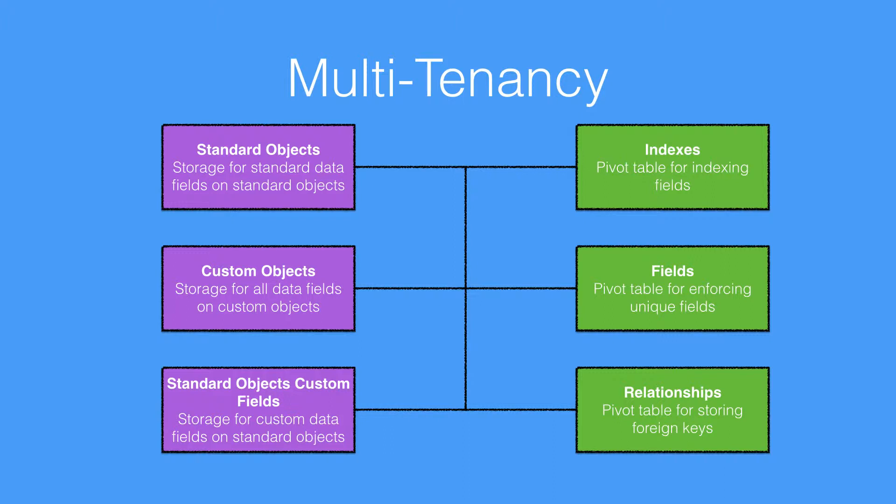On the left-hand side here we can see that there is a series of tables for standard objects that store all the standard data fields for them — so that would be something like the first name and last name on contact. We have custom objects and a table that stores all of the data fields on custom objects, and we then have another data table that stores all of the custom fields for our standard objects.